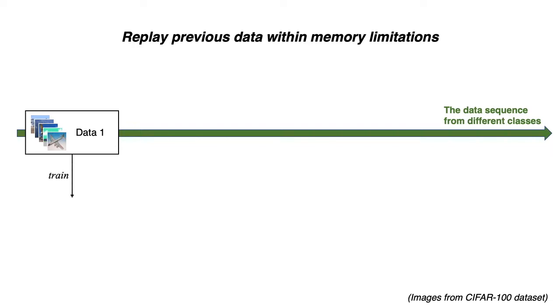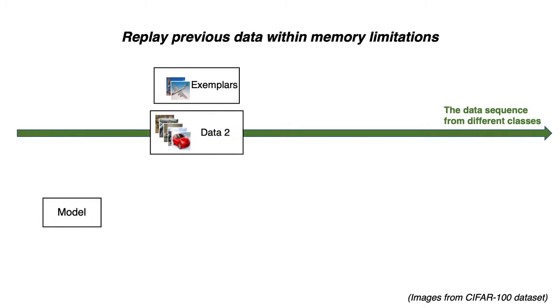In the first phase, before deleting data1, we sample and store a small subset we call exemplars. In the next phase, we adapt the model using data2 as well as data1's exemplars. This enhances the model's representation of data1.